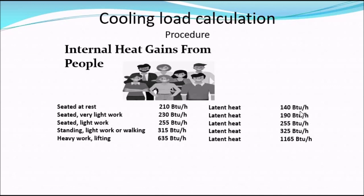Seated for very light work is 230 BTU/hr with a latent heat of 190 BTU/hr. Seated light work is 255 BTU/hr with a latent heat of 255 BTU/hr. Standing light work or walking generates 315 BTU/hr with a latent heat of 325 BTU/hr. Heavy work or lifting generates 635 BTU/hr total with a latent heat of 1165 BTU/hr.